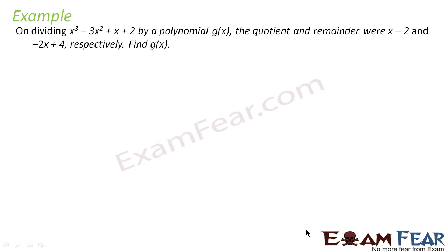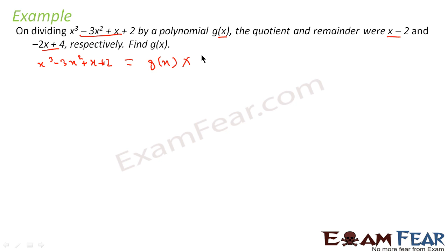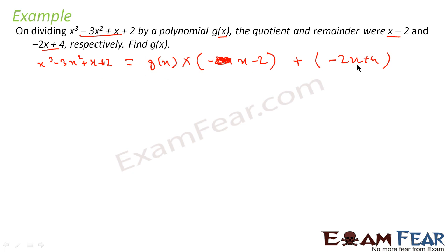Let's take one more example. We are told that on dividing x³ − 3x² + x + 2 by some g(x), we get quotient (x − 2) and remainder (−2x + 4). We know that: dividend = divisor × quotient + remainder, so x³ − 3x² + x + 2 = g(x) × (x − 2) + (−2x + 4).